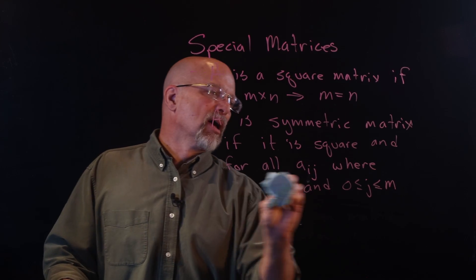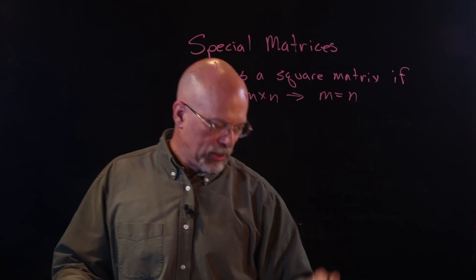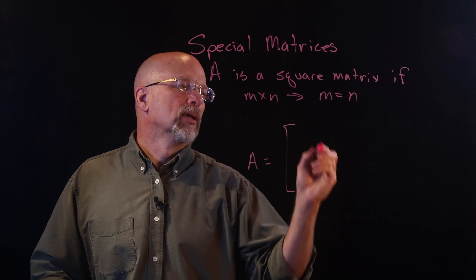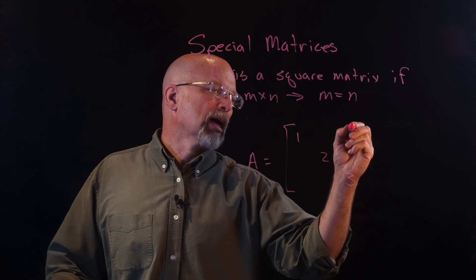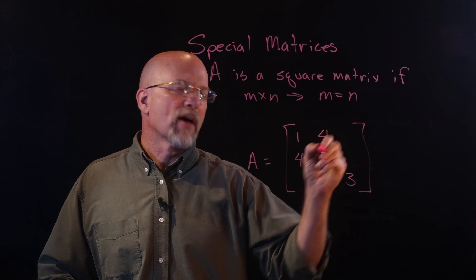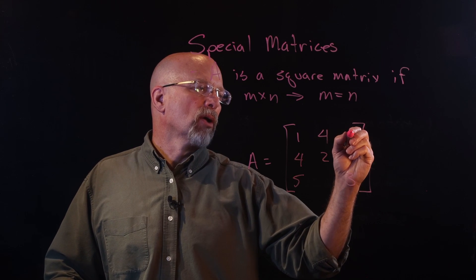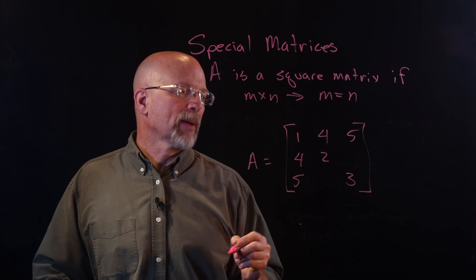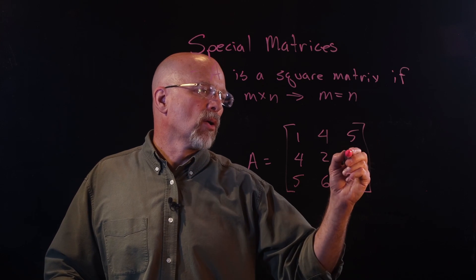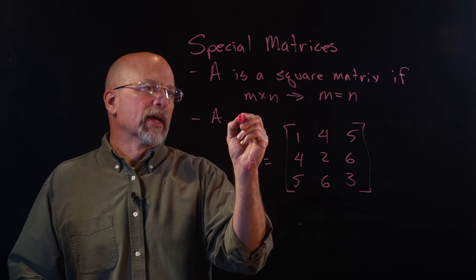Let me give you an example of a symmetric matrix. It's a square matrix, and we've got A equal to 1, 2, 3 down the diagonal. Then in a certain position if I have a 4, I also have a 4 mirrored across the diagonal. If I have a 5 in the lower left corner, I have a 5 in the upper right corner. If I have a 6 in the middle of the bottom row, I also have a 6 in the middle of the last column. That is a symmetric matrix.